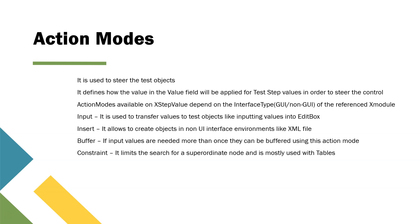Then there is constraint — it limits the search for a superordinate node and is mostly used with tables. We'll look at an example where you can use the constraint action mode to limit your search for certain rows and columns based on particular values. Then there is verify — this is used for verification steps in your test cases. It allows values, control properties, and test objects to be verified. This is also a very commonly used action mode since you need a verification step in every test case.